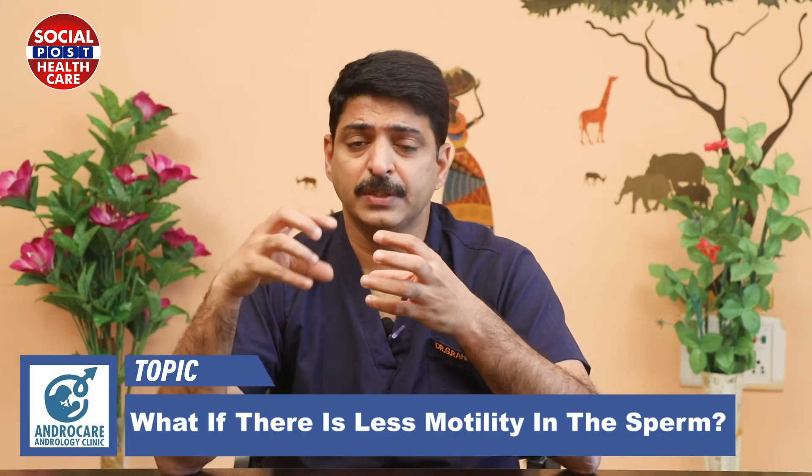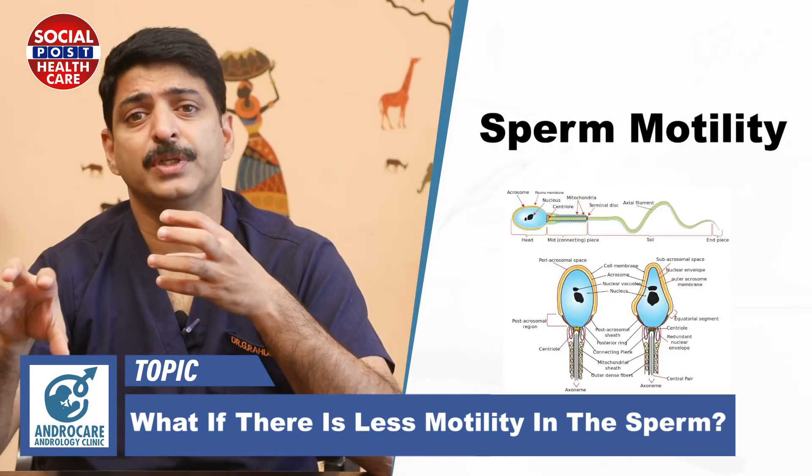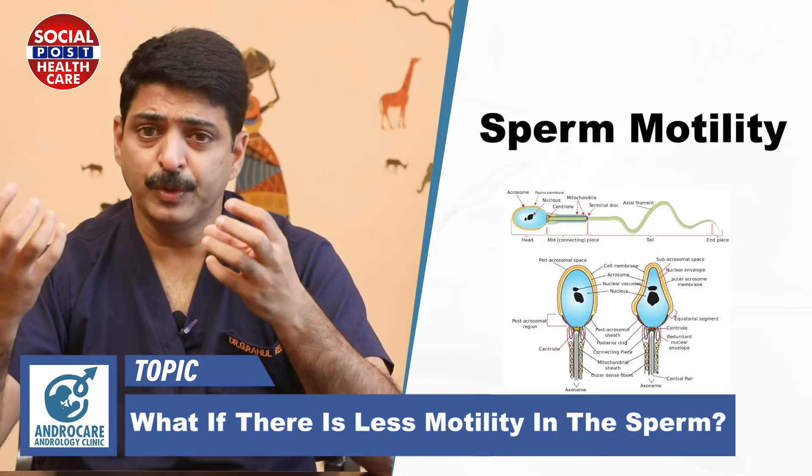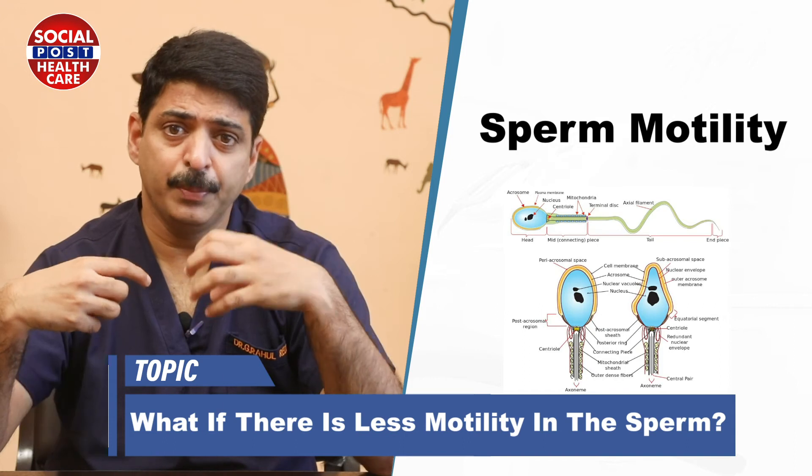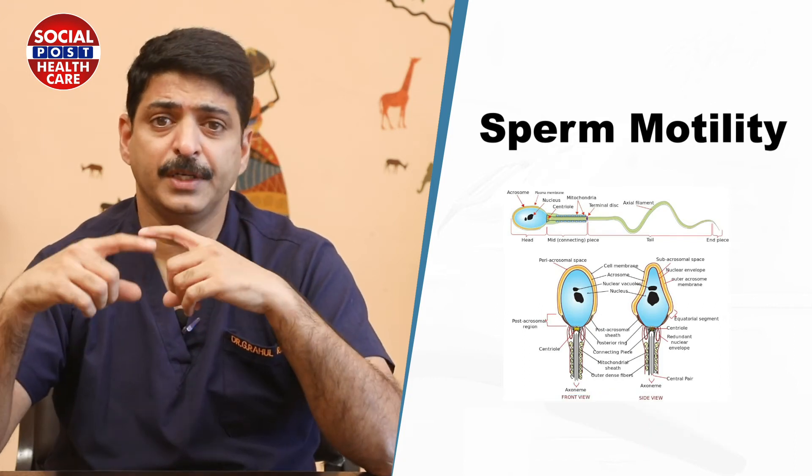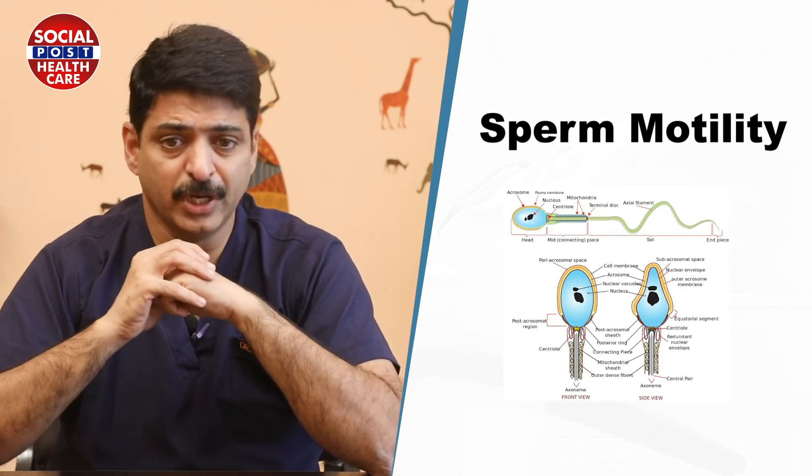The second set of medications they prescribe is antioxidants. Antioxidants are micronutrients — sometimes we call them mitochondrial medicine. These medications include Coenzyme Q10, Astaxanthin, Lycopene, and L-Arginine. These are micronutrients necessary for sperm production and sperm motility. When you take these, they help in sperm formation and in turn improve sperm motility.